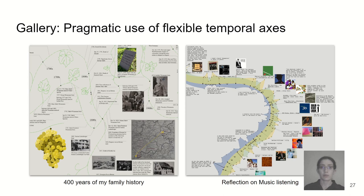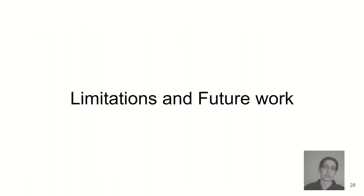In our gallery, among other things, we demonstrate the pragmatic uses of idiosyncratic timelines. In the visualization on the left, a visualization of 400 years of my own family history, I used the shape of the line to wrap around media items, thereby incorporating them into the design of the line. On the right, one of my colleagues did a visualization of data pulled from various music streaming services, choosing to bend the line outwards to allow additional space for album cover images around the numeric data.